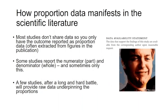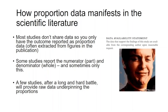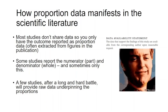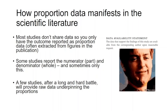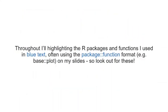How does proportion data typically manifest in scientific literature? We typically don't have the raw data. Studies only present proportion data in their figures; some studies won't even present proportions directly and instead present numerator and denominator data from which we calculate proportions; and a few, after a long hard battle, will provide raw data. We're left with different levels of detail to combine into a meta-analysis. I'm going to take you through three problems I came across when dealing with proportion data, and the proposed solutions I implemented — highlighting R packages and functions in blue.